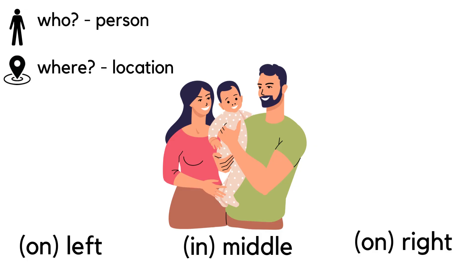Let's review a little vocabulary. The question word 'who' is when we're talking about a person. For instance: who is in this picture? There's a mother, a father, and a baby. When we say 'where,' we're talking about location — left, middle, right. You can keep going back and forth with questions about who and where: where is the mother? The mother is on the left.